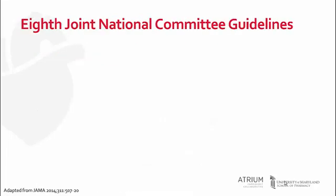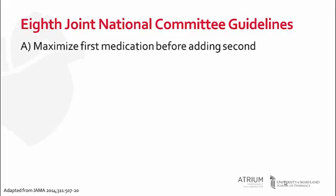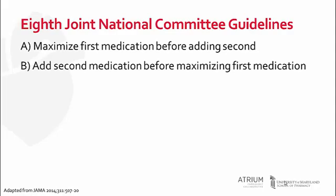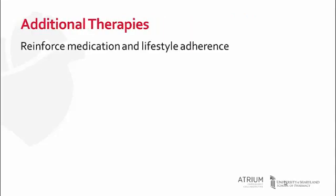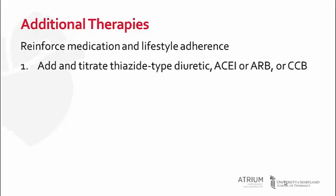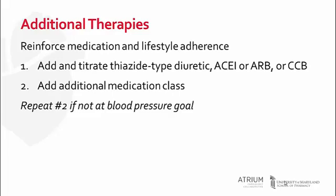After choosing the initial therapy, different approaches may be taken. Initial therapy may be maximized before adding a second agent, or a second agent may be added before maximizing the first medication, or two medication classes may be started at the same time, either separately or as a fixed dose combination. If blood pressure is not at goal, first reinforce medication and lifestyle adherence. Then, using a medication class not previously selected, add and titrate a second type of agent — either a thiazide-type diuretic, ACE inhibitor, ARB, or calcium channel blocker. Additional medication classes such as hydralazine and clonidine may also be added, and a referral to a physician with hypertension management expertise may be made.